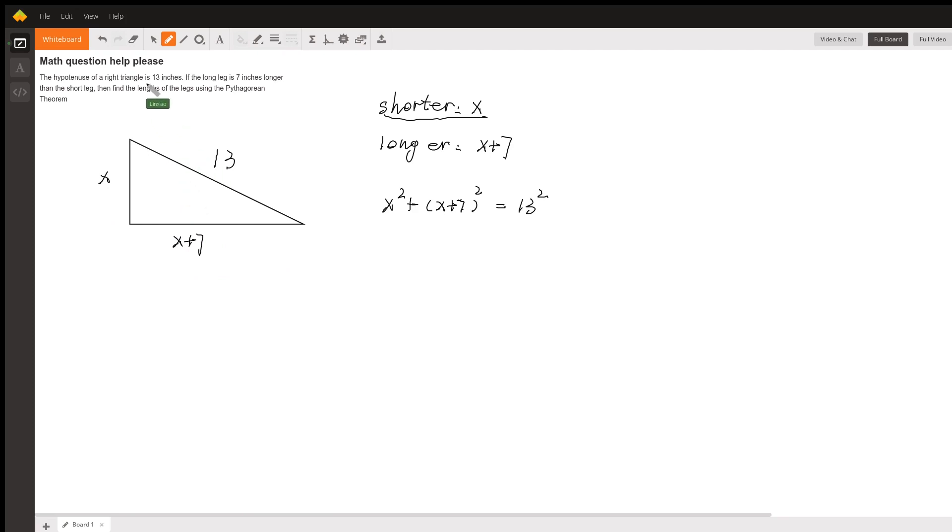So in this triangle by Pythagorean theorem we have x squared plus x plus seven squared is equal to 13 squared, because a squared plus b squared is equal to c squared. This is the Pythagorean theorem. So in this case we can expand this equation.